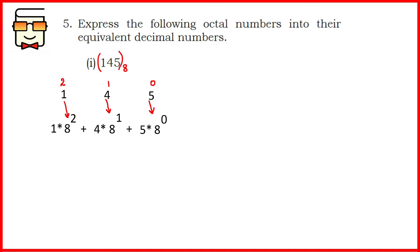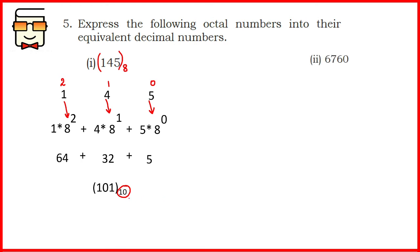There are three digits, so the positions go from 0 to 2. You raise 8 to the appropriate position value, multiply each digit by the appropriate power of 8, and add all these values. When you solve the individual parts you get 64 plus 32 plus 5, and the final answer is 101 in base 10 — that is, in decimal. It is important to write the base value in the final answer.